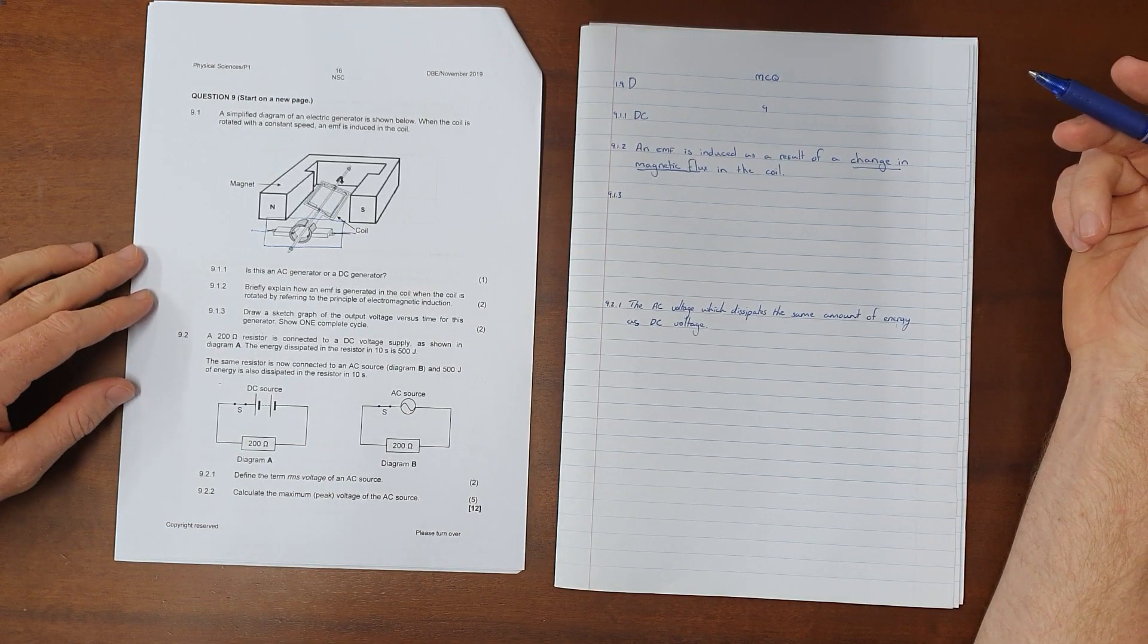Question 9.1.3: Draw a sketch graph of the output voltage versus time for this generator, showing one complete cycle. A sketch graph means we don't necessarily need a heading or values - all we need is a set of axes with axis titles. The y-axis is voltage, measured in volts, and the x-axis is time, measured in seconds.